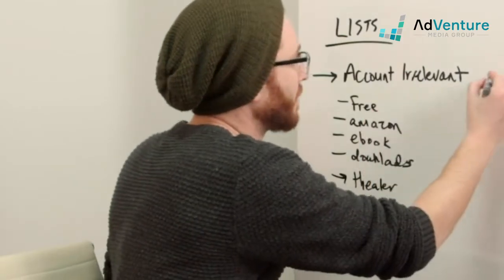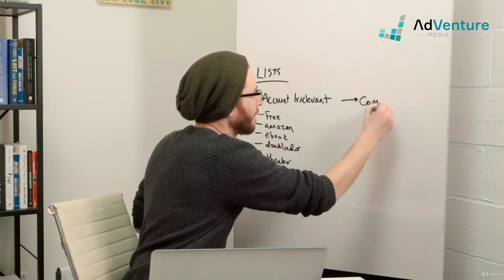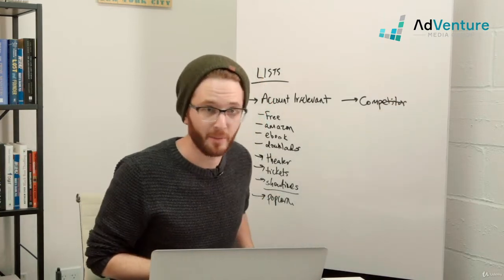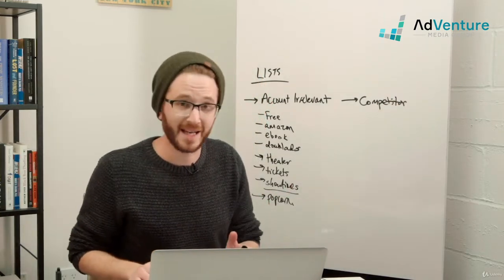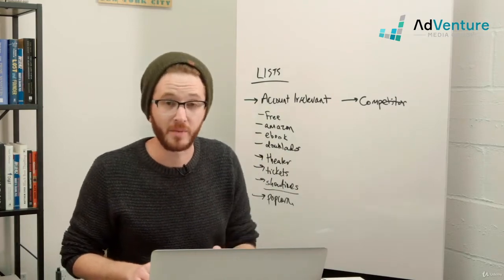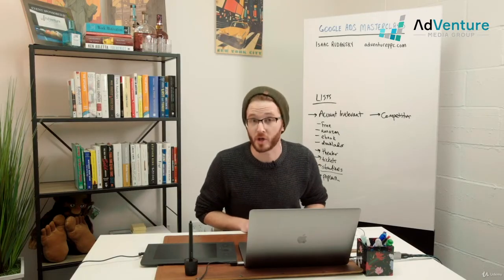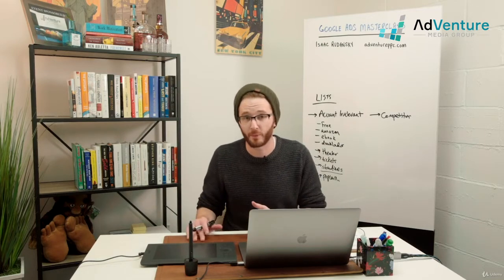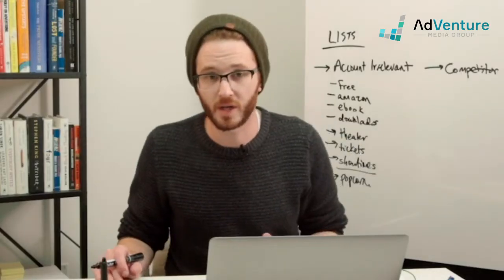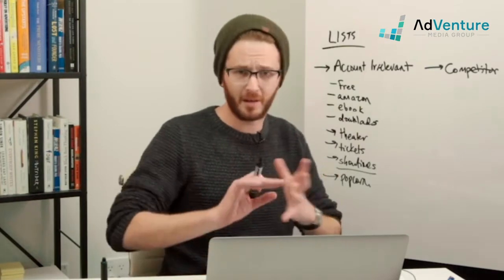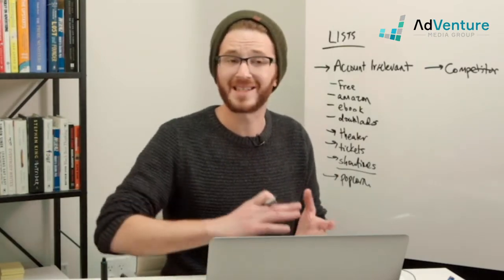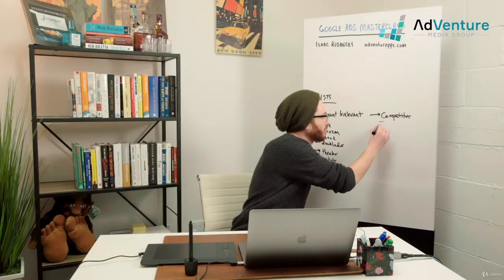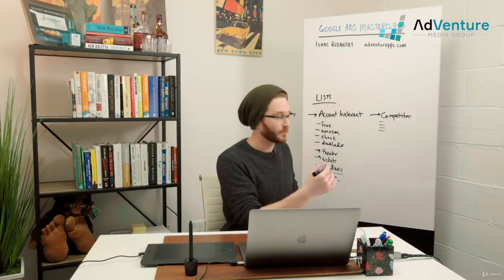Another very popular list is a competitor list. You might choose to have competitor campaigns or you might not. There are cases where a competitor campaign makes sense — for example, if you were Microsoft, you might want to show an ad for the Surface Book when someone searches for MacBook Pro. I always suggest testing competitor campaigns, but you could also have a competitor negative keyword list and apply it to all your campaigns.